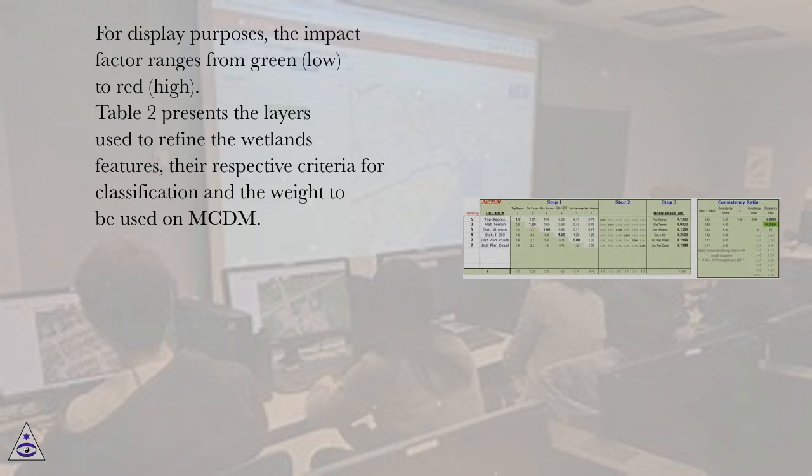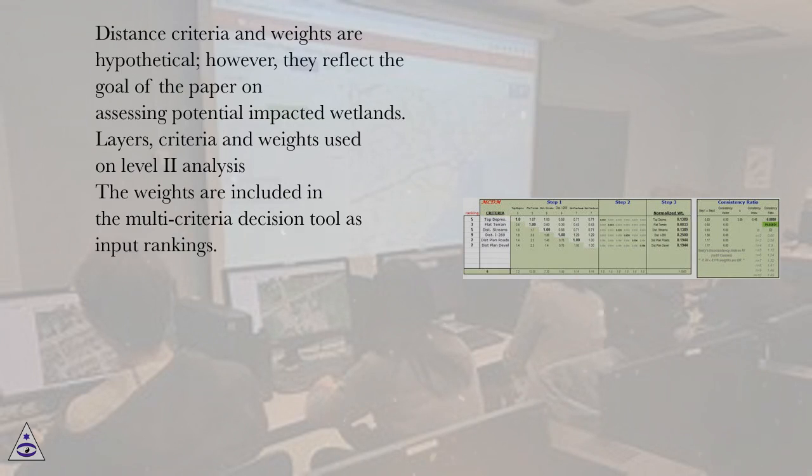Table 2 presents the layers used to refine the wetlands features, their respective criteria for classification and the weight to be used on MCDM. Distance criteria and weights are hypothetical, however, they reflect the goal of the paper on assessing potential impacted wetlands. Layers, criteria and weights used on Level 2 analysis. The weights are included in the multi-criteria decision tool as input rankings.